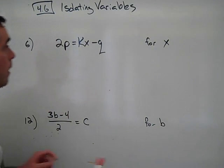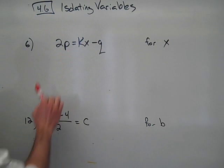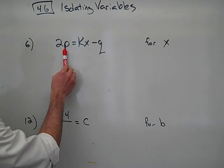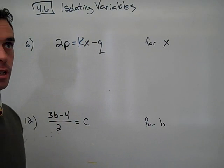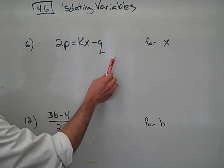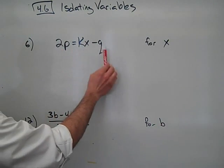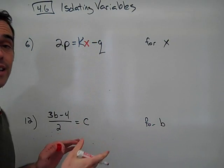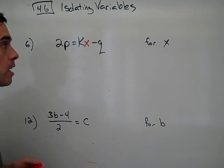We are looking at an equation with multiple variables. We're not going to be able to actually find out what any of these variables stand for, what their number equivalence is. All we're looking to do is to rewrite this equation so that this x right here is isolated on one side of the equal sign.